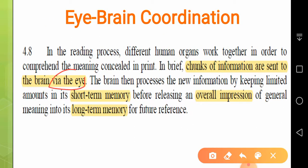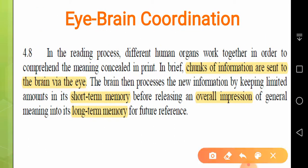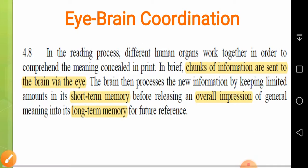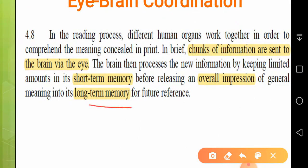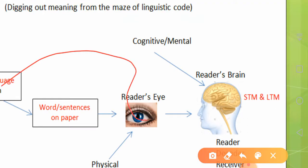Chunks of information — that is, the message, ideas, and thoughts of the writer — are sent to the brain via the eye. The role of the eye is to give signals to your brain. The brain then processes the new information by keeping limited amounts in its short-term memory. In short-term memory, it is said that we can hold only about seven bits of information. Short-term memory releases an overall impression — the gist — of general meaning into long-term memory for future reference.